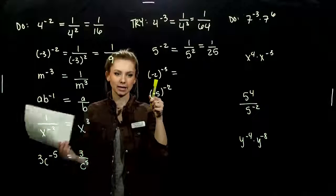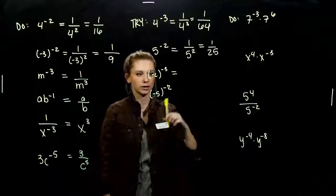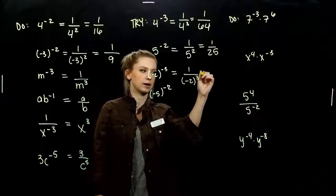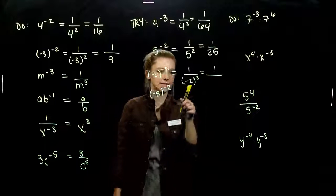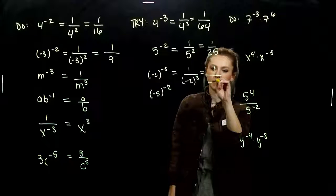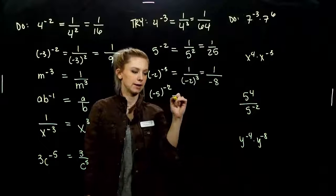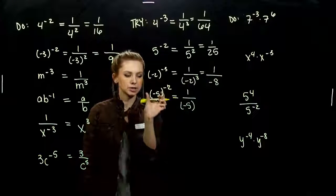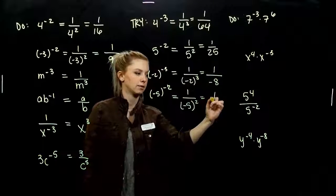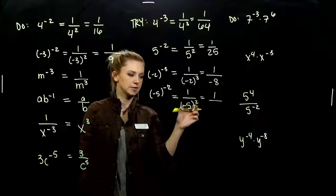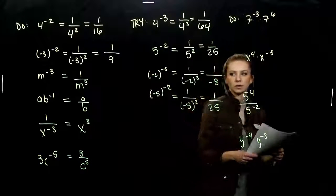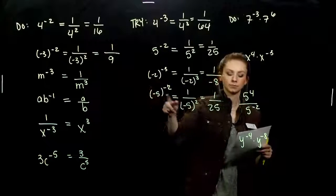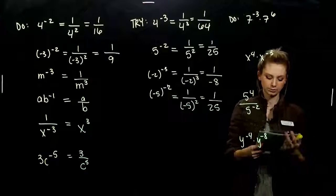For part C, my base is negative 2 and my power is negative. So when I look at the reciprocal, my base isn't going to change. But my power is now going to be positive. And if I take negative 2 to the third power, we get negative 8. And last, again, negative base and negative power. When we look at the reciprocal, base isn't changing, but the power is going to be positive. So negative 5 times negative 5 gives us positive 25. So we're looking at 1 over 25.